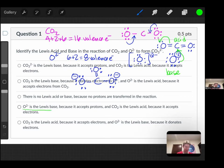Let's see... I see O²⁻ is the Lewis base because it accepts protons - no, wrong. CO₂ is the Lewis acid because it accepts electrons, O²⁻ oxide is the Lewis base. There we go, we have found which one it is.